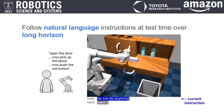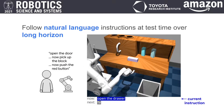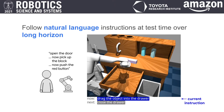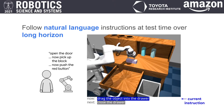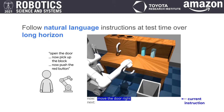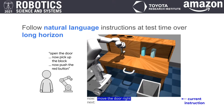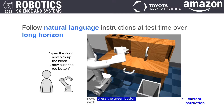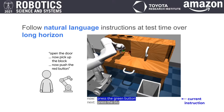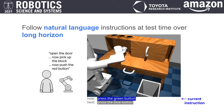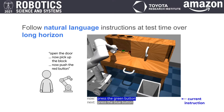At test time, we only use text conditioning. A human enters free-form natural language instructions, and the learned visual motor policy executes the instructions in closed loop. Here's an example of a human typing free-form commands at test time to our agent.